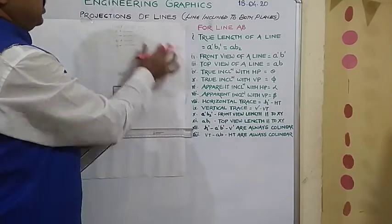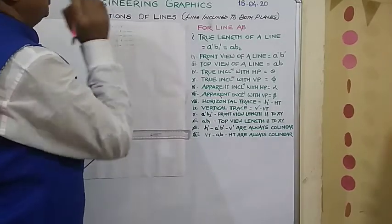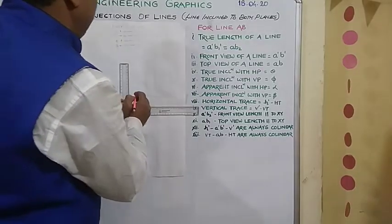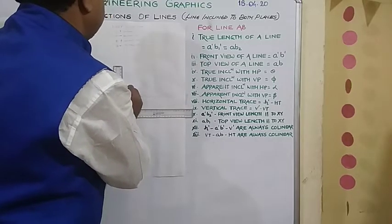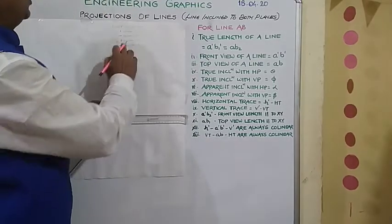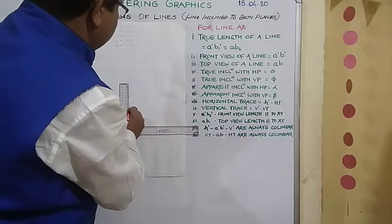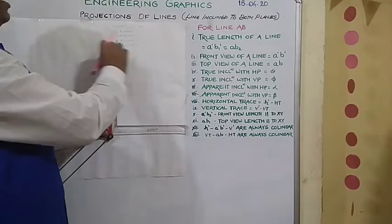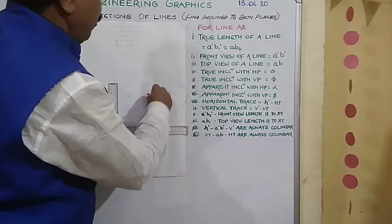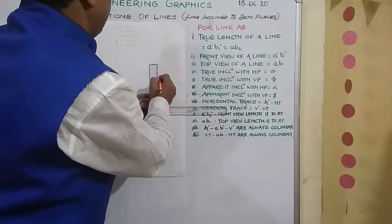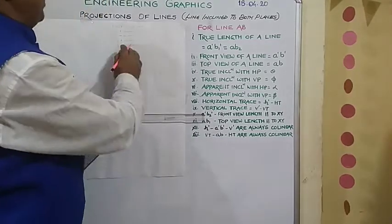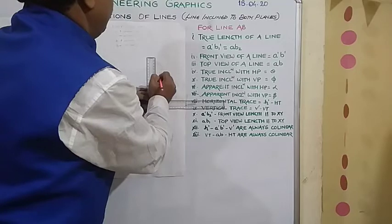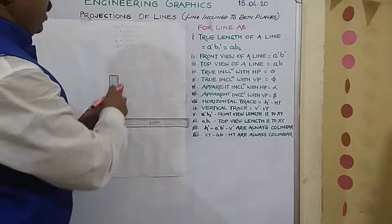Distance between the end projectors is given 60 that I have taken. Now position of A is given 10 millimeter above HP. So from XY I will take distance 10 millimeter again I will take more distance. As it is above HP A dash. And 30 in front of VP so I will take 30 distance downward it is A. So A dash and A is over now. Now B is 40 millimeter above HP. So from this particular point we will take 40 distance above. So this is B dash. And 50 in front of VP so that is there above. So B dash and B is marked.